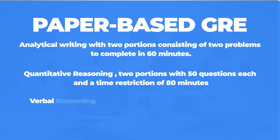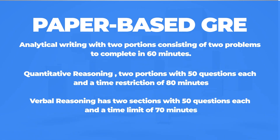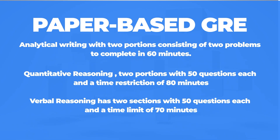For the paper-based GRE, Verbal Reasoning has two sections with 50 questions each and a time limit of 70 minutes. There will be a one-minute break between the first and second portions, and a 10-minute rest before the third section. In general, the exam lasts around 3 hours and 45 minutes.